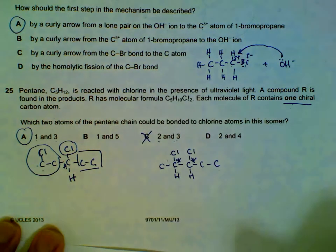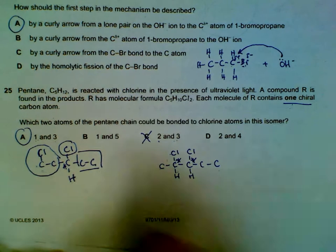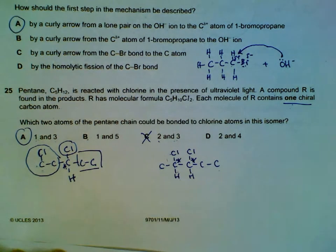You can also try B and D. You realize that only A has one chiral carbon.